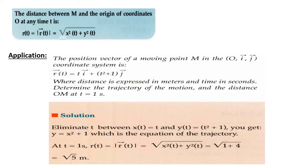Now, regarding the distance om, it is the norm of the vector r at t equals 1. So, at t equals 1, the norm equals the radical of x squared plus y squared at t equals 1. So, it is radical of 1 plus 4, which equals radical 5 meters.